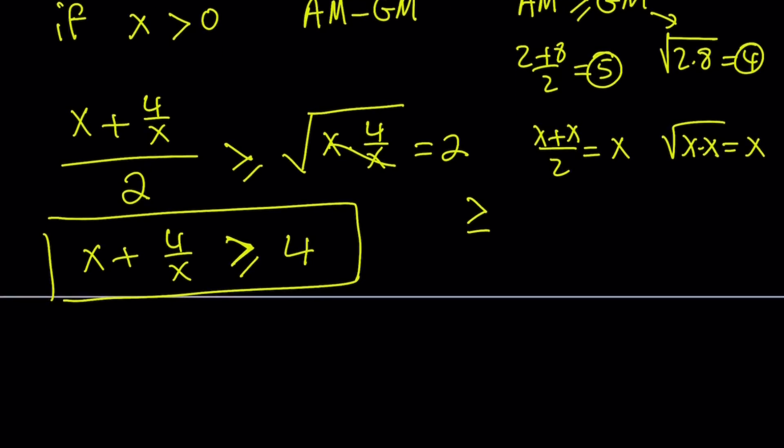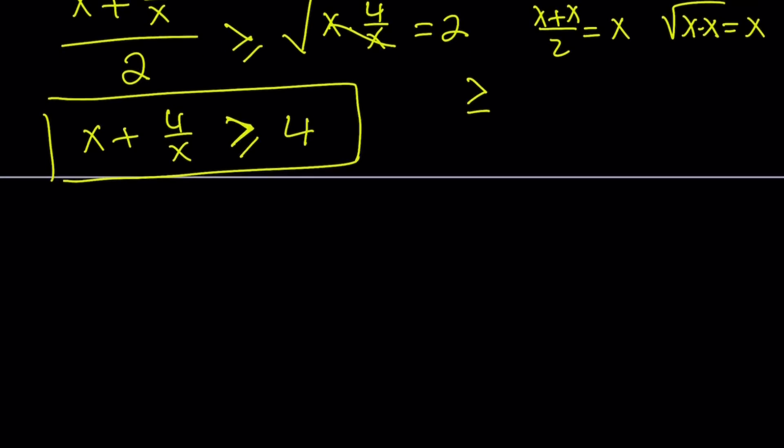But let's go ahead and apply to the exponential situation first. So what about if we compare these two numbers, 2 to the x and 2 to the power 4 over x? Their arithmetic mean is supposed to be greater than or equal to their geometric mean, which is the square root of their product.